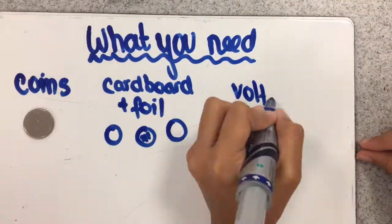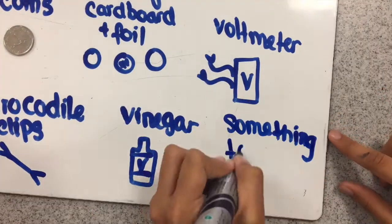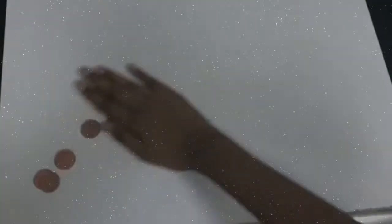So what do you need? We need copper coins, cardboard and foil, a voltmeter, crocodile clips, vinegar and something to power up. So let's get started.